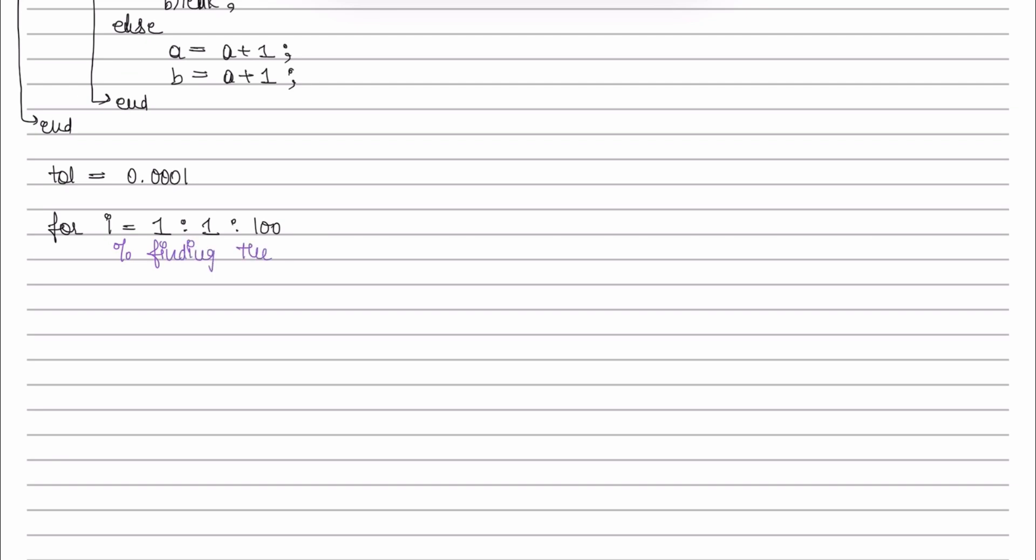Finding the midpoint, m is equal to a plus b by 2. So here f of m is equal to f of m.